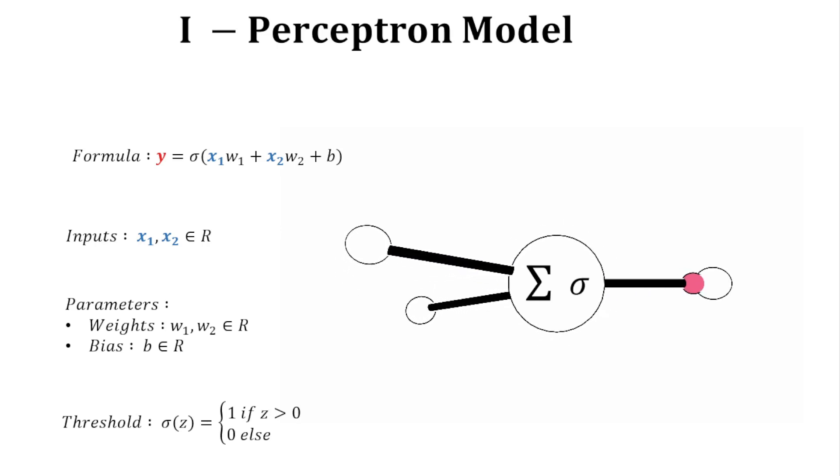Then the threshold function activates or not if the argument is over zero. There are several possible threshold functions like sigmoid or the step function. So now you know the formula of a perceptron. But what is the purpose of it?